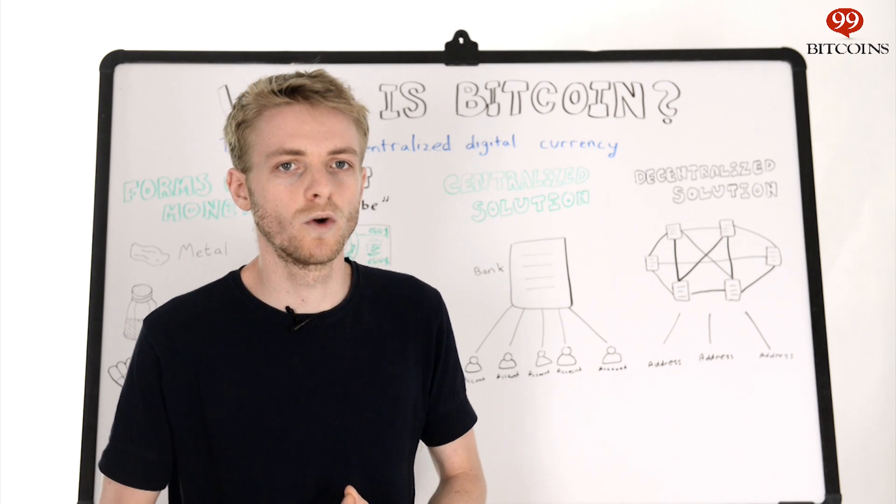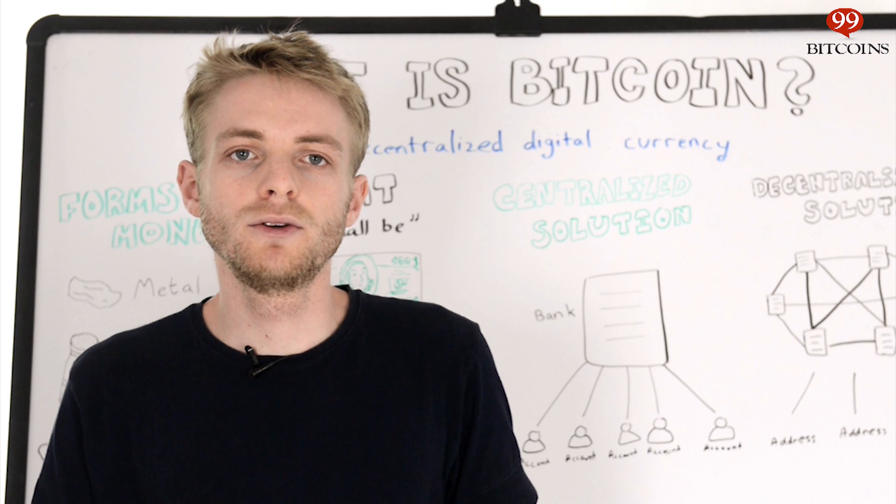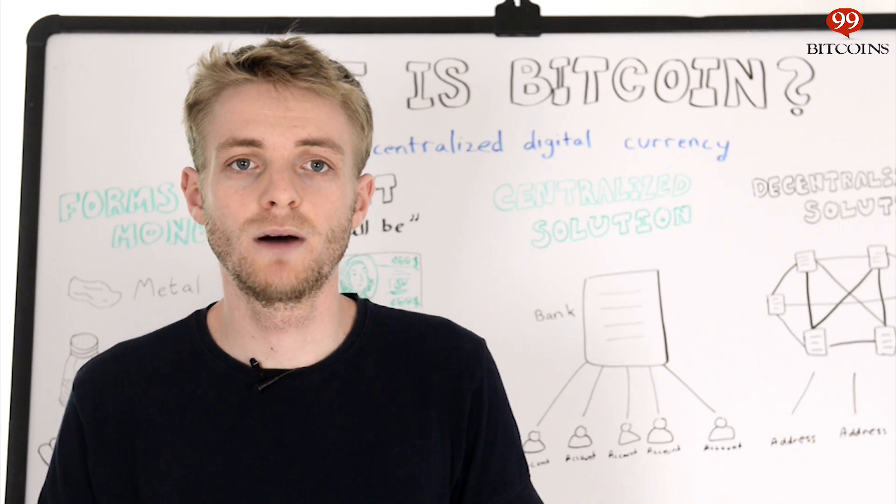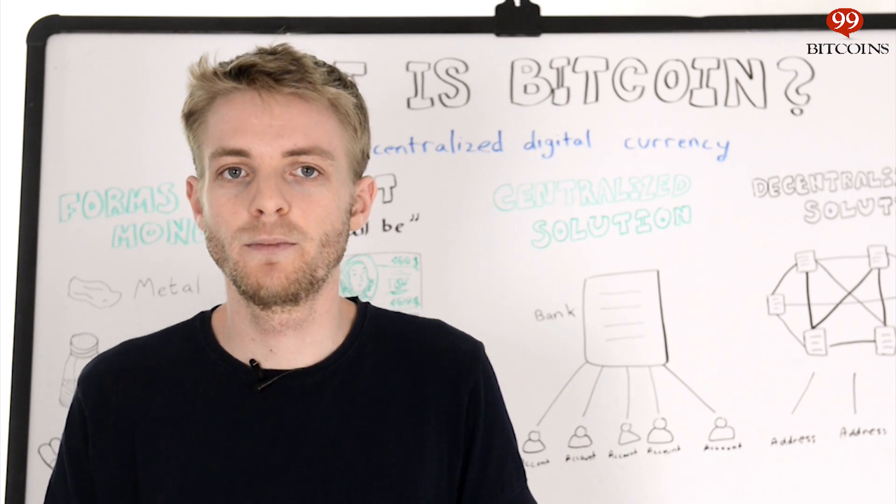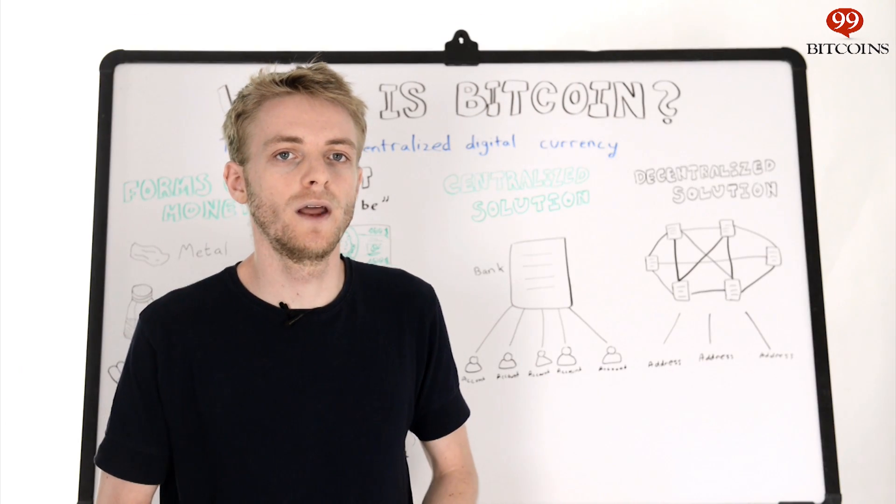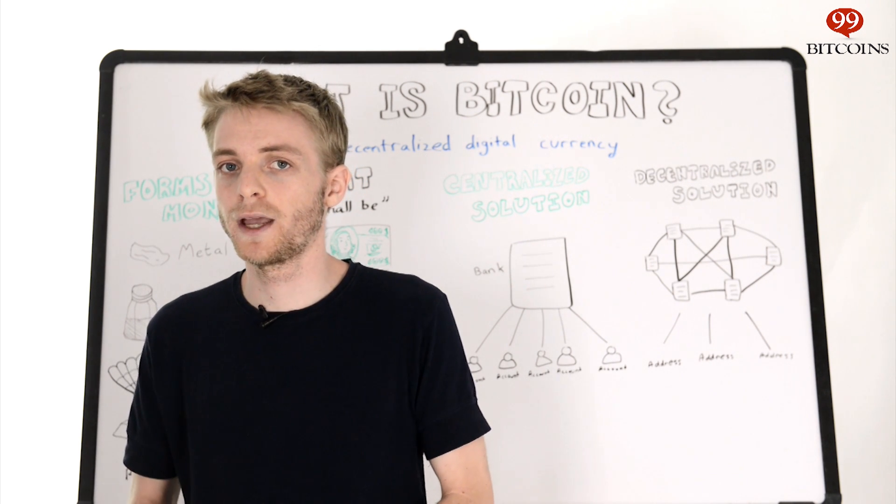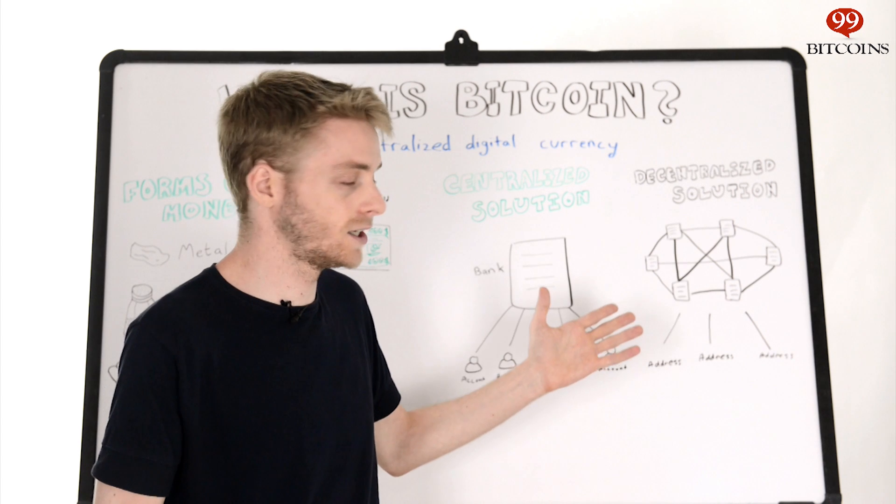Computer scientists though weren't pleased. Decades later in 2008, an anonymous researcher publishes a paper describing how to solve this problem without a centralized solution, that is without a bank. He called it Bitcoin and went on to describe how you can make a ledger that doesn't rely on a single particular bank. This is a decentralized solution.